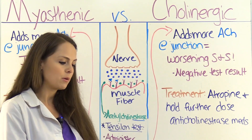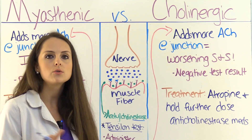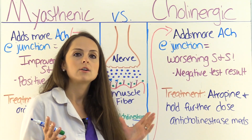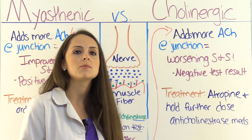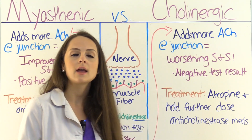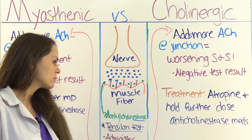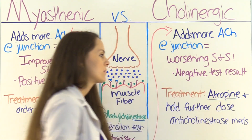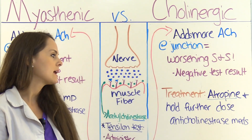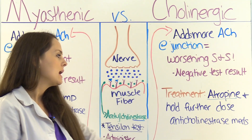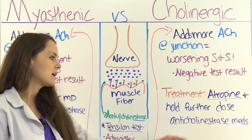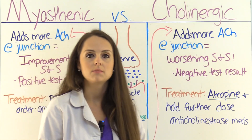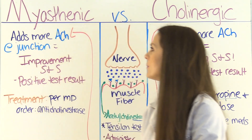Treatment for cholinergic crisis aims to reverse the signs and symptoms of this cholinergic overdrive response. An antidote for edrophonium is atropine, so you'll give atropine to reverse the signs and symptoms, and hold any further doses of that anticholinesterase medication because the patient really doesn't need any of that right now.